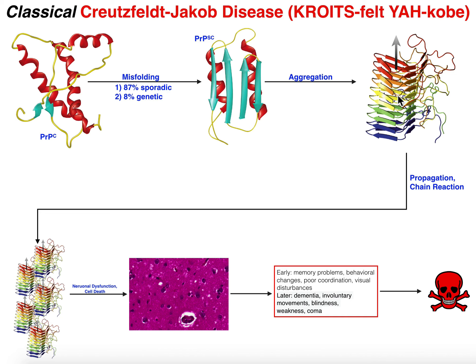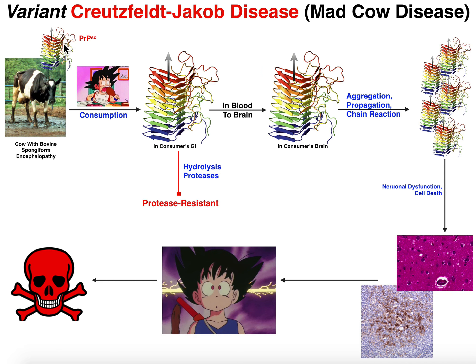There is another way cows can get it. In the past, in Europe, they fed cows bone meal from previously deceased cows. And if that cow had classical CJD, then because this protein is infectious, the cow that consumed that bone meal could then develop mad cow disease. Mad cow disease has the same underlying mechanism as classical Creutzfeldt-Jakob disease, except it's in cows — and so they develop aggregates of the infectious prion protein PRPSC.